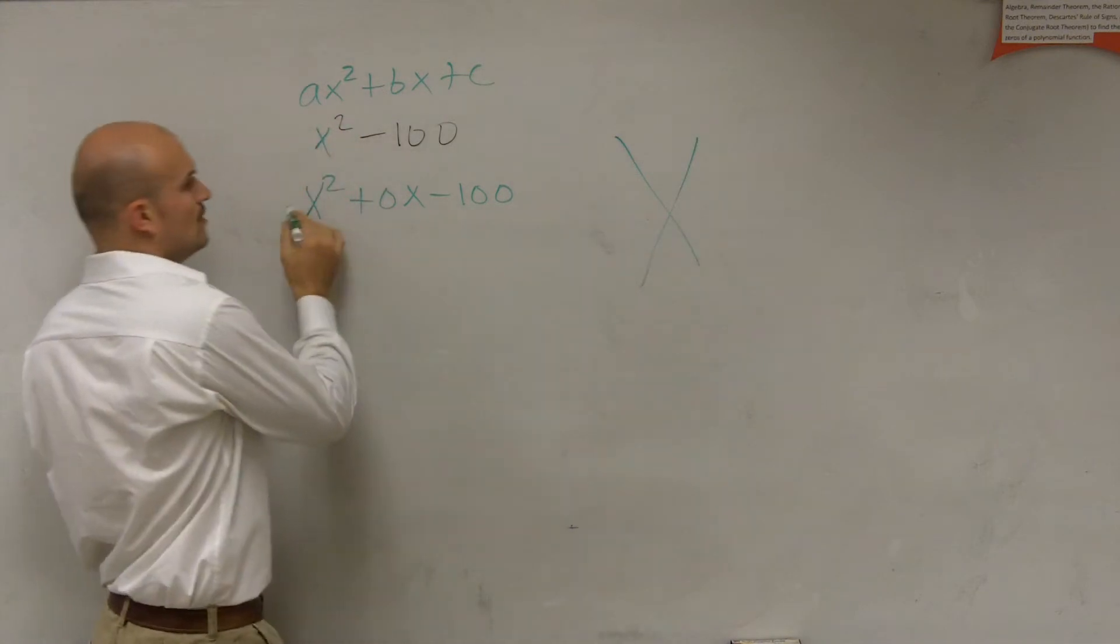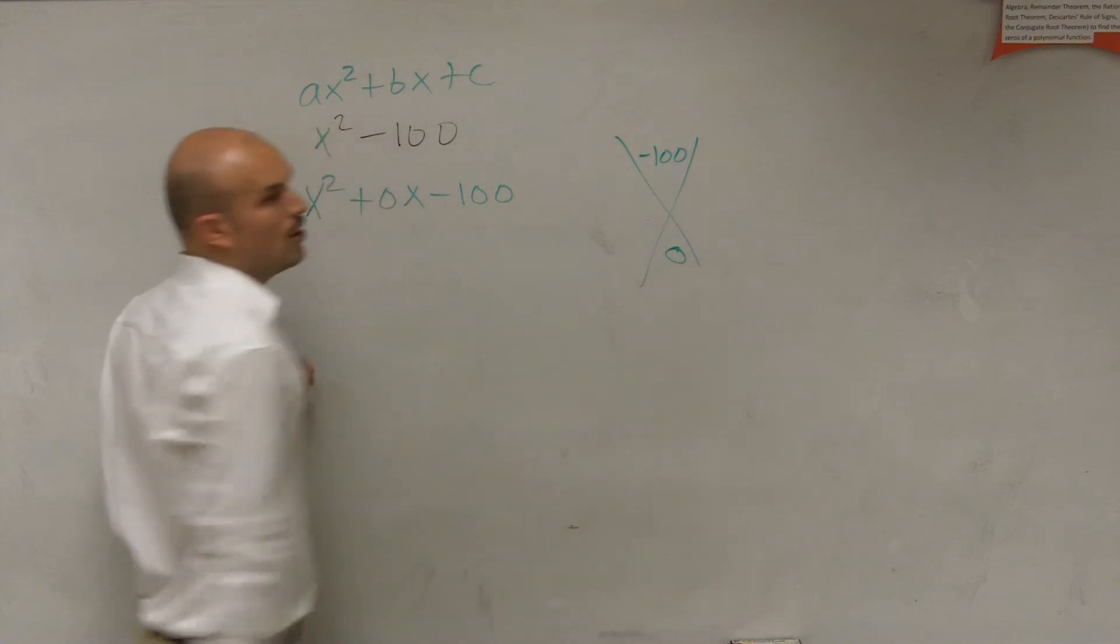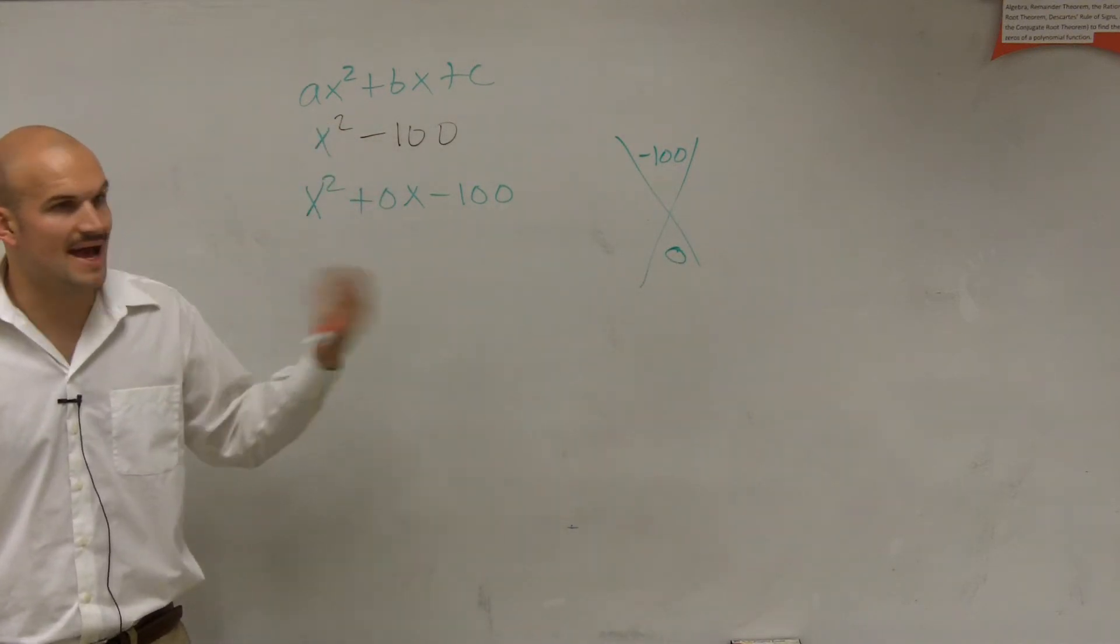a times c, 1 times negative 100 is negative 100, and then 0. What two numbers multiply to give you negative 100, but add to give you 0?